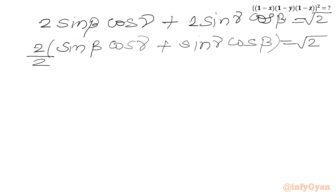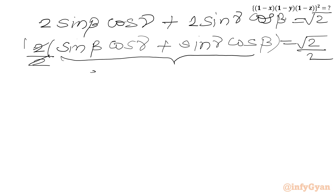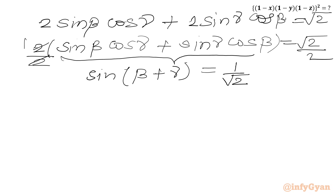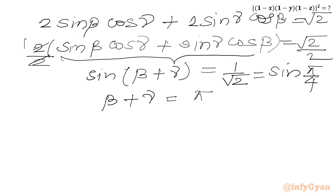Dividing both sides by 2, we get sin(β + γ) equal to √2/2, which equals 1/√2, and this is sin(π/4). So our equation number 5 is β + γ equal to π/4.